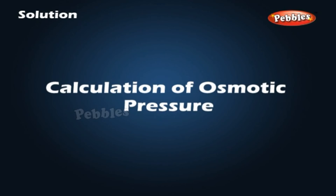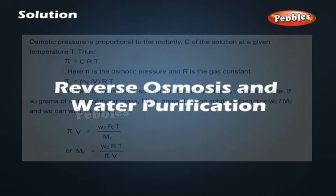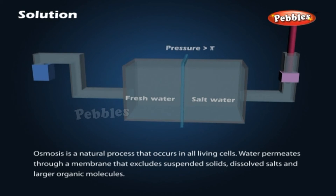Osmotic pressure is proportional to the molarity C of the solution at a given temperature T. Thus, π = CRT, where π is the osmotic pressure and R is the gas constant. Also, π = (n2/V) · RT, where V is the volume of solution in litres containing n2 moles of solute. If W2 grams of solute of molar mass M2 is present in the solution, then n2 = W2 / M2, and we can write the expression as shown above.